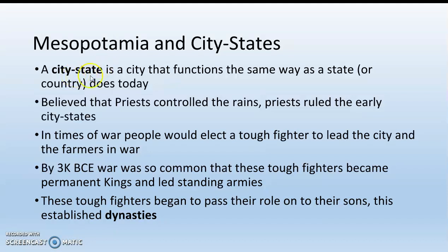Mesopotamia is made up of city-states — a city that functions the same way as a state or country does today. Basically, Mesopotamia is made up of lots of little tiny countries that are really just cities. The people in these city-states believe that priests control the rains, and since you need water to farm, priests are the ones who rule the early city-states. In times of war, people elect a tough fighter to lead them, and by 3000 BCE, wars are so common that these tough fighters have become permanent kings leading standing armies.